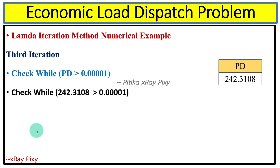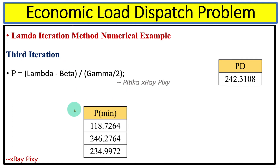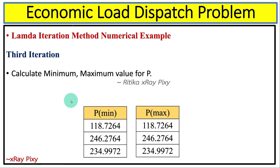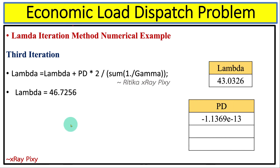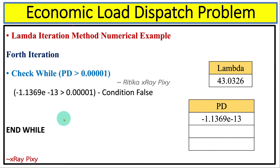For the third iteration, we put the value in and the condition is again true. We calculate the new value for P, check minimum and maximum bounds, then calculate the new load value Pd and compute the new value for lambda.